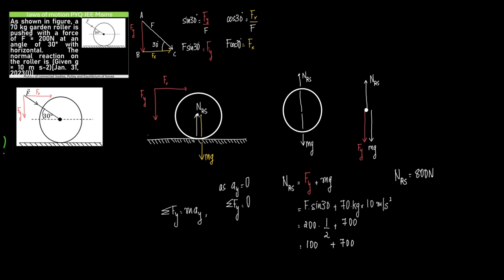As shown in figure, a 70 kilogram garden roller is pushed with a force of 200 Newton at an angle of 30 degrees with horizontal. The normal reaction on the roller is given by.